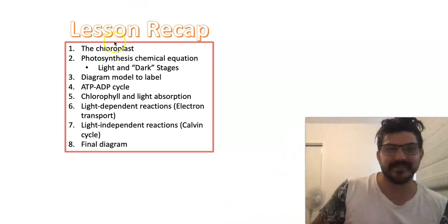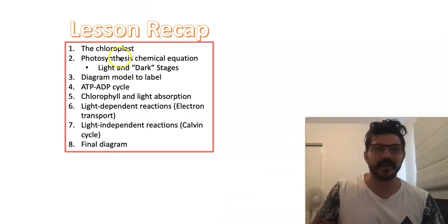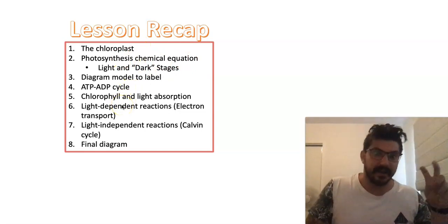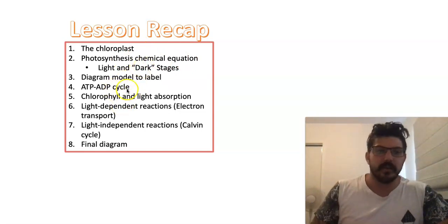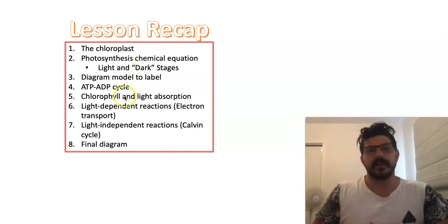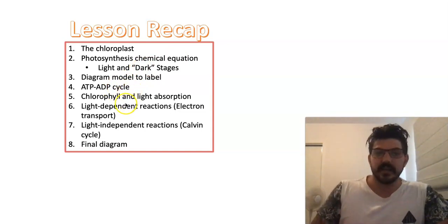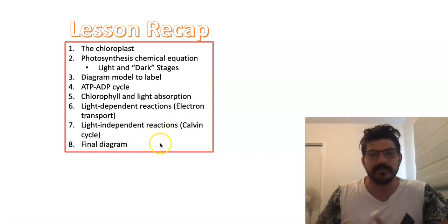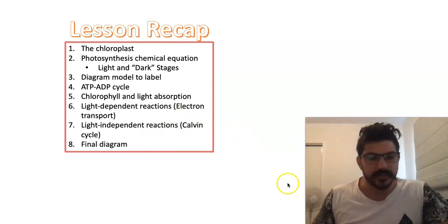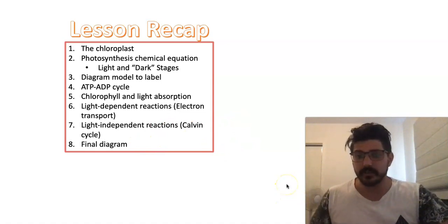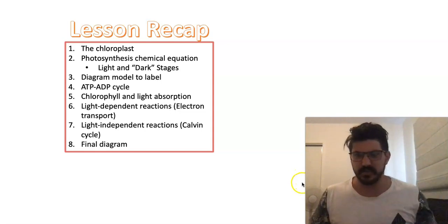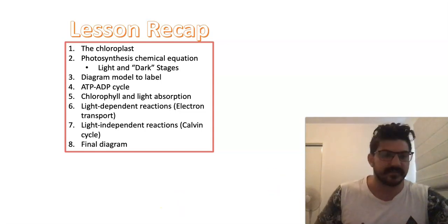What a lesson! We discussed the chloroplast, went over photosynthesis's chemical equation including the distinction between the light and dark stages, looked at a diagram model, talked about ATP and ADP, chlorophyll and light absorption, the light-dependent reactions being the electron transport chain, the light-independent reactions being the Calvin cycle, and then the final diagram which you can use for your notes. That is an absolute monster of a lesson — thank you for dealing with me, and I'm going to put this up as one take. Why not, sounds fun!